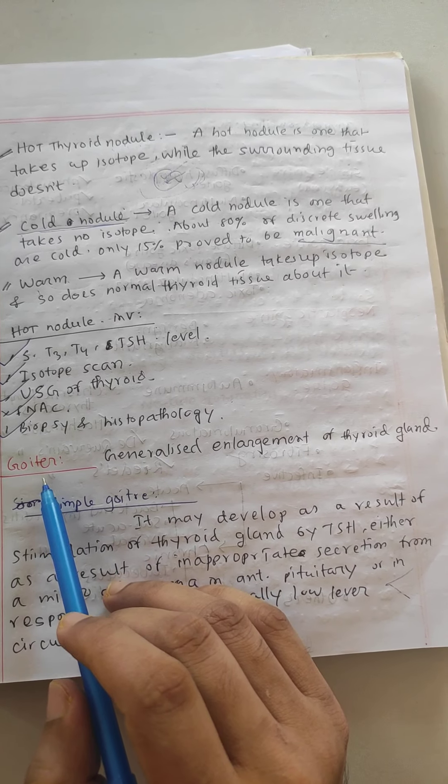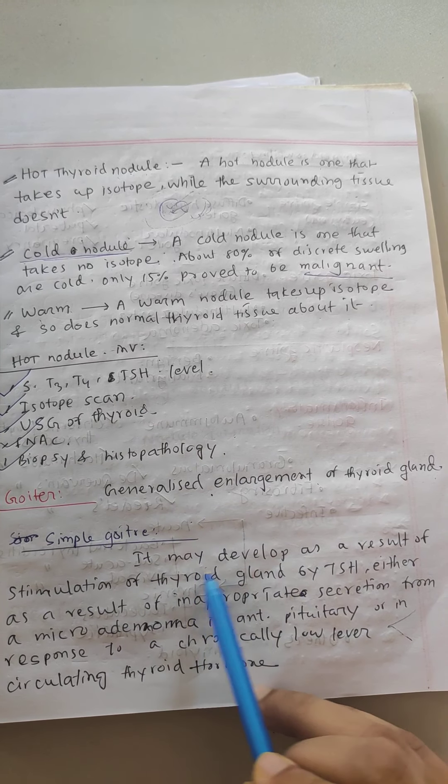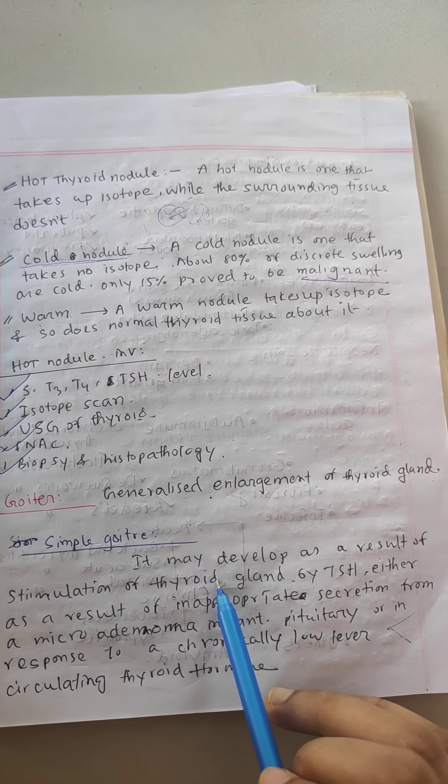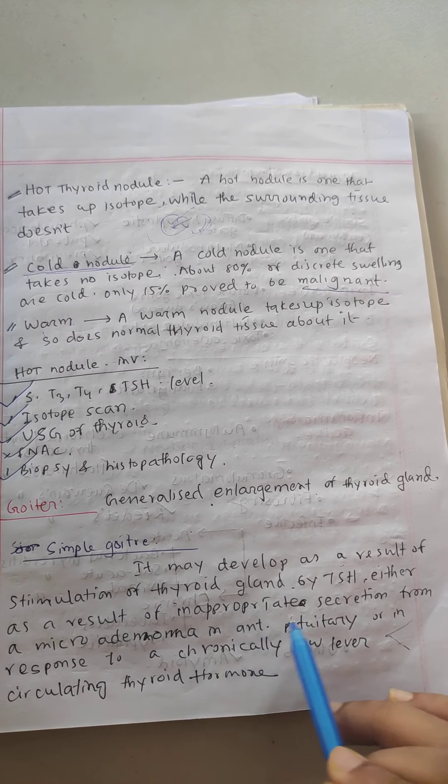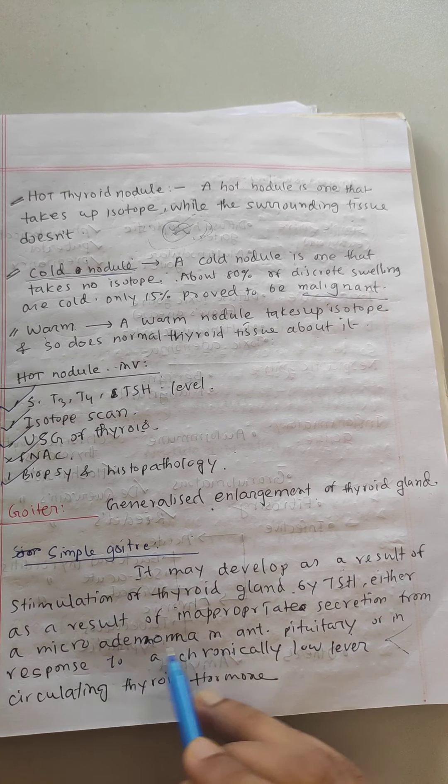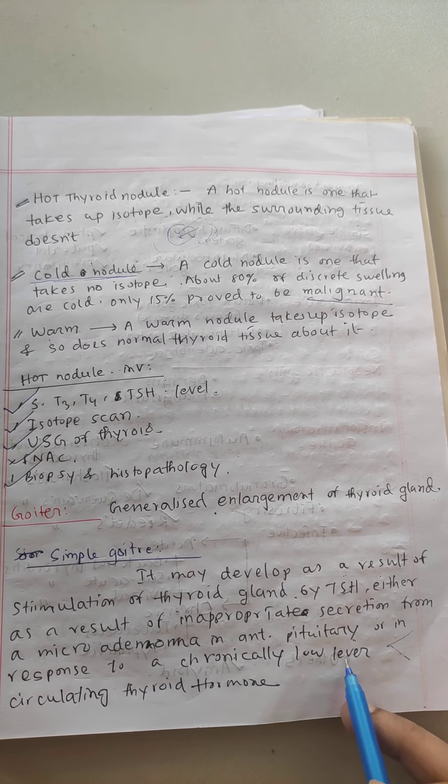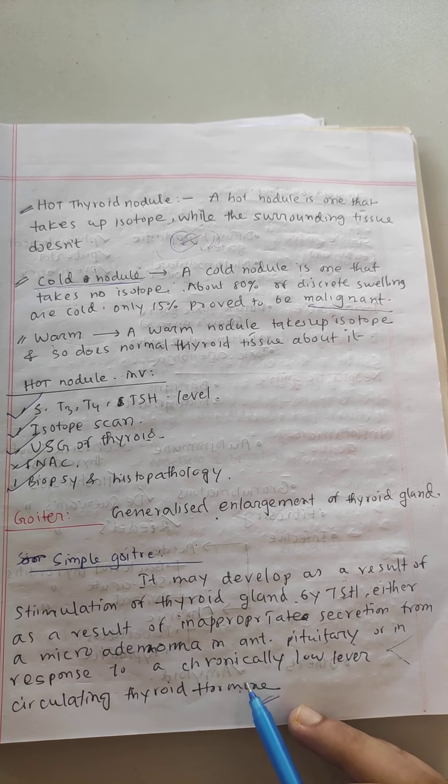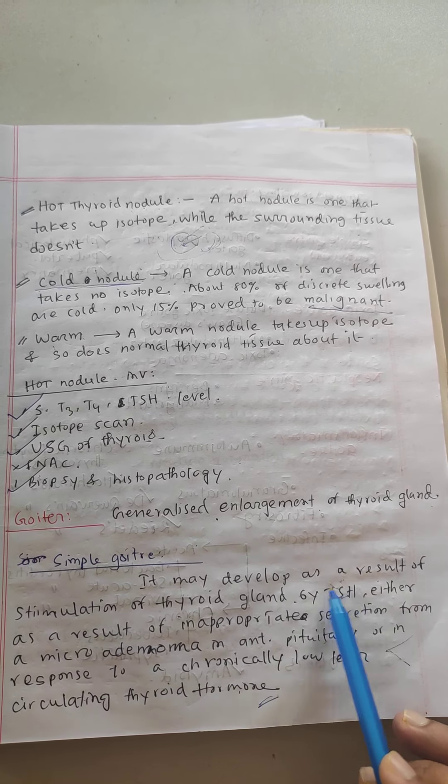Our next question is goiter. What is goiter? It is the generalized enlargement of the thyroid gland. It may be developed as the result of stimulation of the thyroid gland by TSH, either as the result of inappropriate secretion from microadenoma in the anterior pituitary, or in response to chronically lower level circulating thyroid hormone. If T3, T4 is reduced or low, TSH level increases, leading to more goiter.